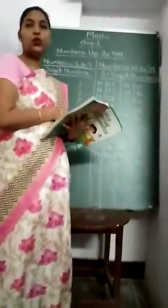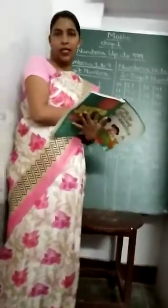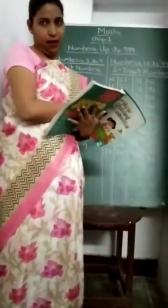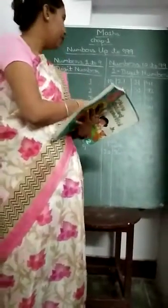Then 2 digit number comes. It is from 10 to 99. For example like 10, 11, 12, 13, 14, 15, 16, 17, 18, 19, 20 and so on.